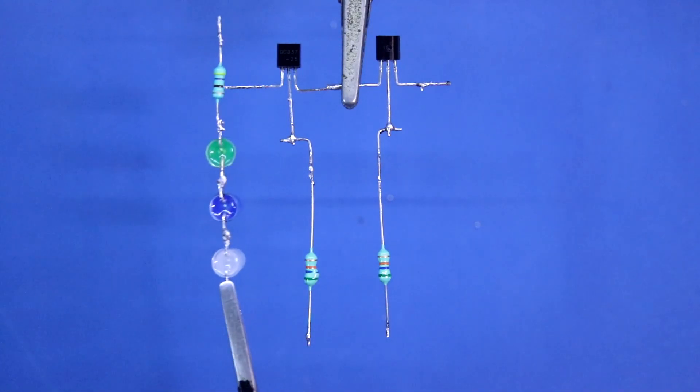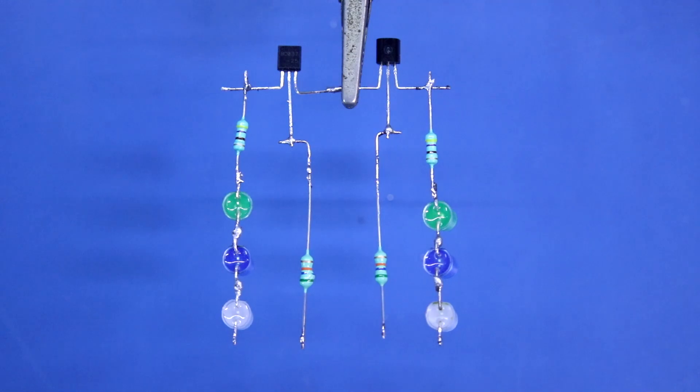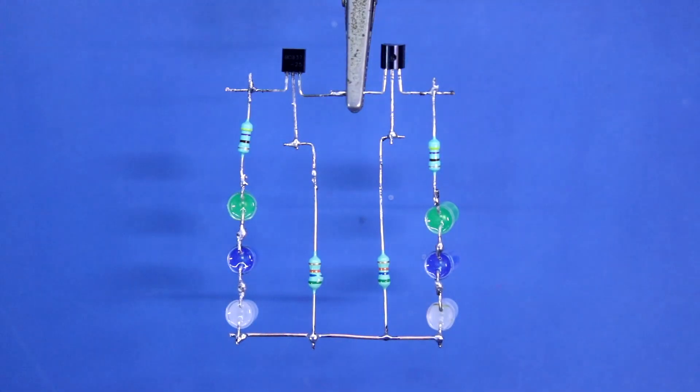Now we have to solder these LEDs to the collector of the transistor. Now we have to solder all these 4 pins. These are connected.